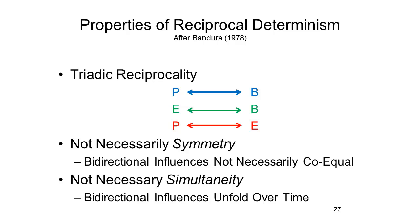Nor does reciprocality imply simultaneity of influence. When personal factors exert their effects on behavior, the behavior may not be influencing the person's states and dispositions at precisely the same time. More likely, as implied by the notion of feedback, these bi-directional influences unfold over time. Somebody enters a room in a good mood, cracks a joke, and lightens the mood of everybody else in the room. The person's mood state has affected his behavior, that behavior has changed the environment, and now the lightened mood in the room may encourage the person to crack more jokes. That's what we mean by triadic reciprocality unfolding over time.